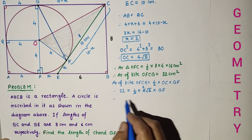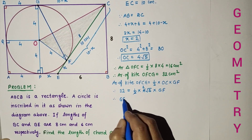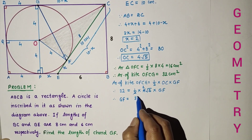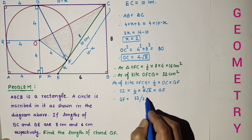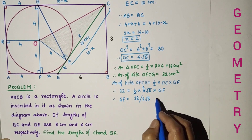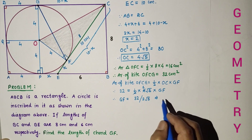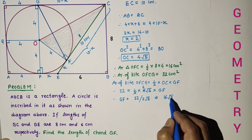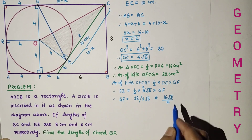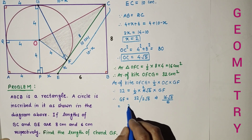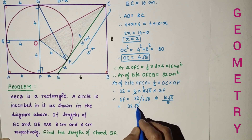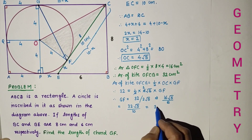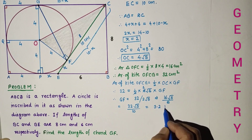The 2s cancel, so GF equals 32 divided by 4√5, simplified to 16 by √5, which equals 16√5 by 5, or 32√5 by 10, which equals 3.2 times √5.